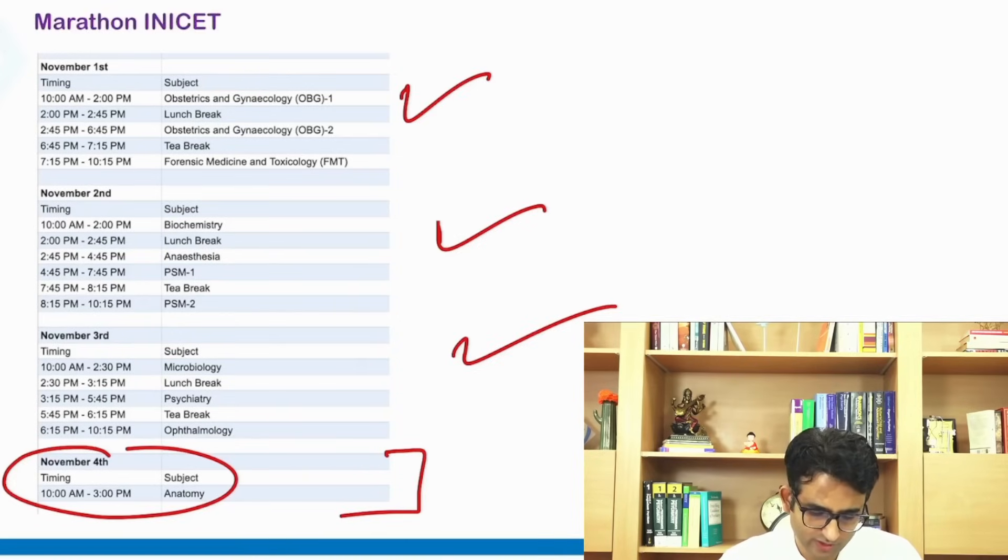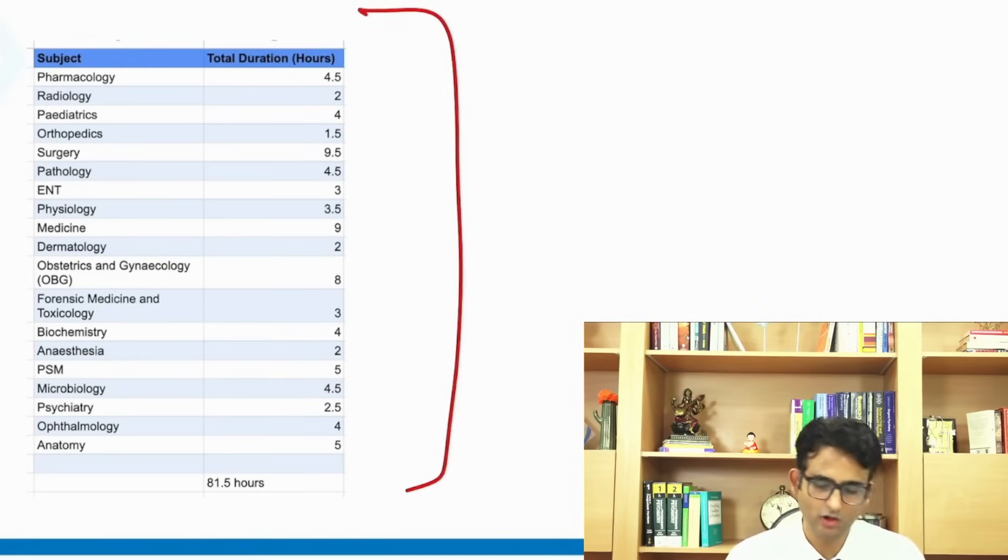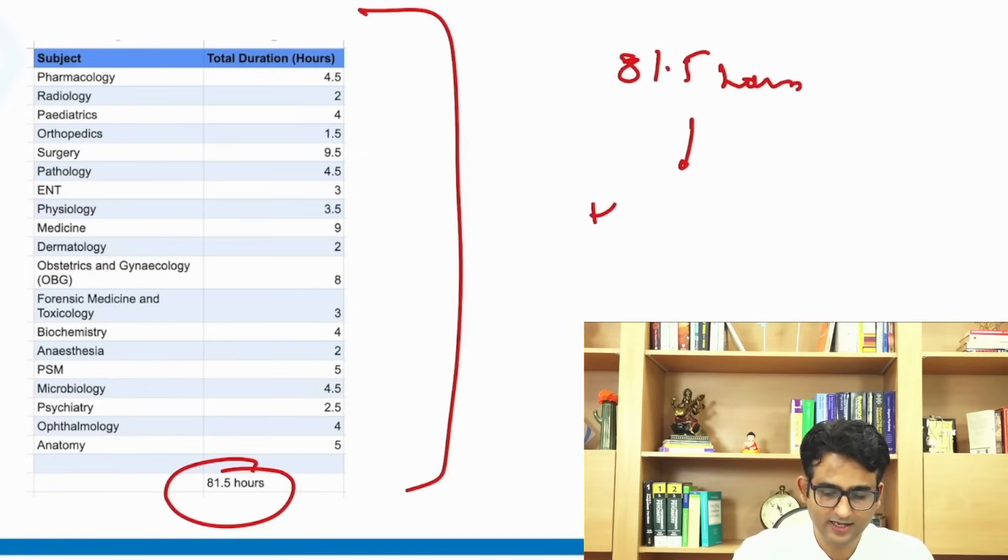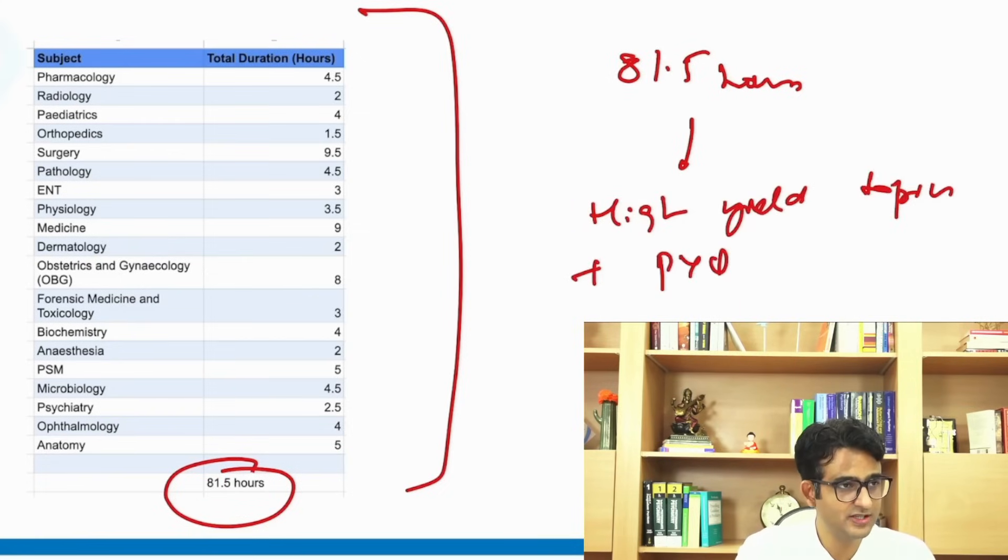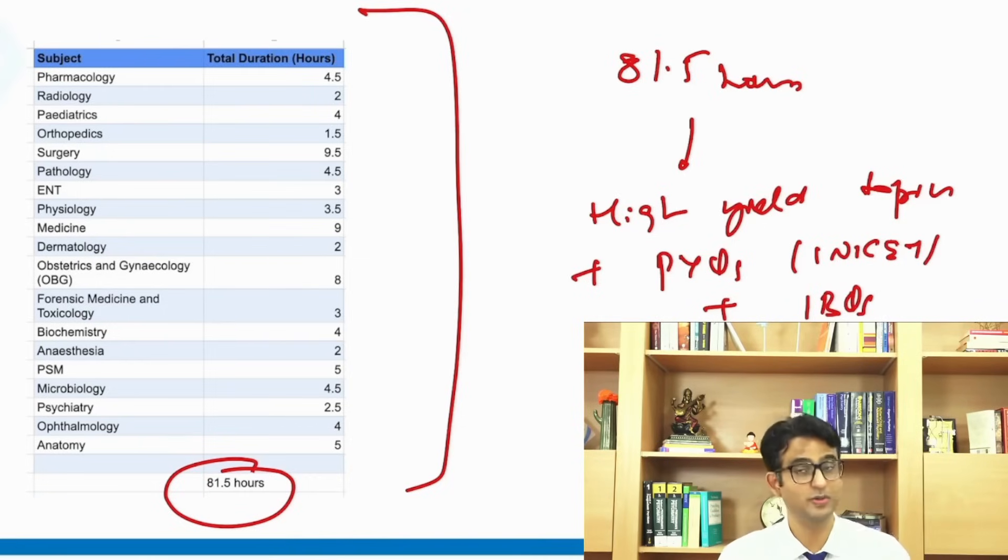So it is a fully packed schedule for seven and a half days. In total we will be covering all the subjects in 81.5 hours. So 81.5 hours of high yield topics, a lot of previous year questions, again INI CET based and image based questions. So it is going to be tough, studying on a stretch for 10-11 hours for almost seven days just before the examination. But believe me, this is going to be very high yield, very dense, a lot of information packed together, and I am assuming that those who attend it would get greatly benefited by this course.